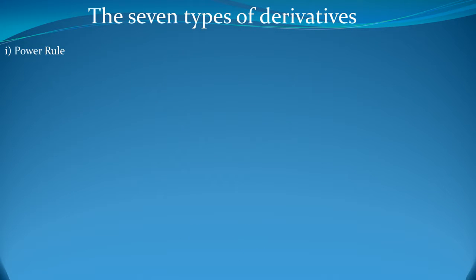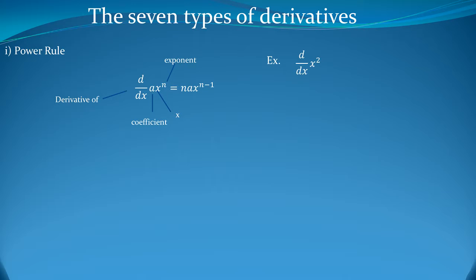So first, the power rule. Here is what it looks like: d/dx of ax^n equals n·ax^(n−1). So a is a coefficient, x is plain x, and n is an exponent. For example, what is the derivative of x²? We write the coefficient, which is 1, bring the exponent down, and get 2 times 1 times x^(2−1), so the derivative of x² is 2x.